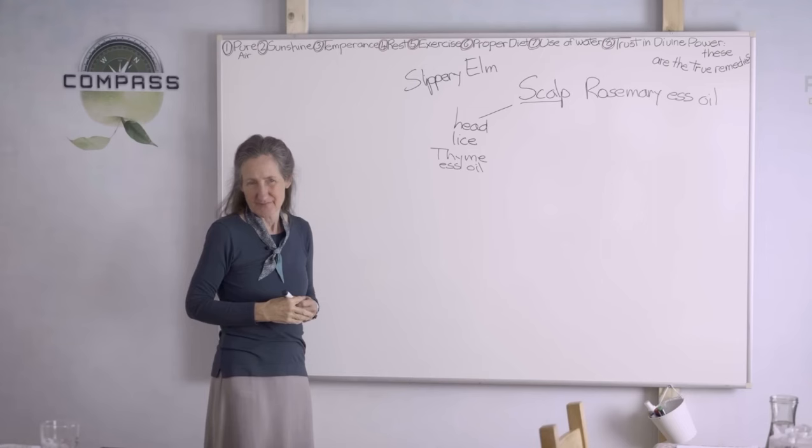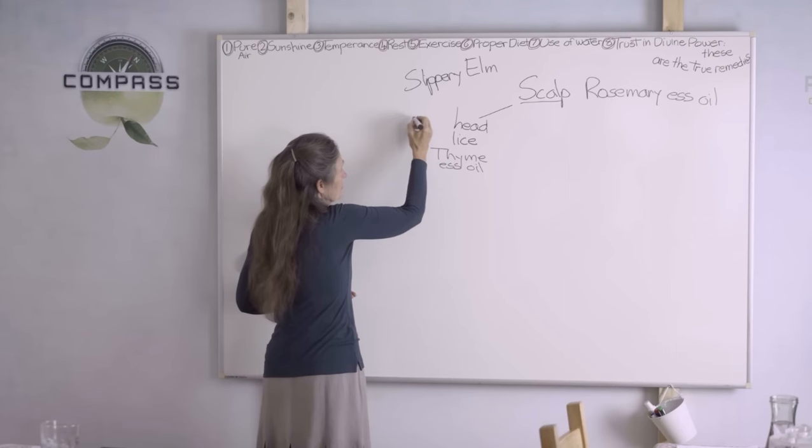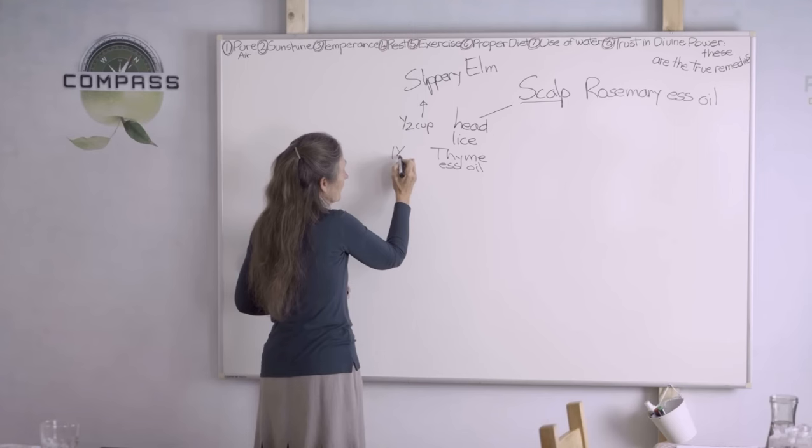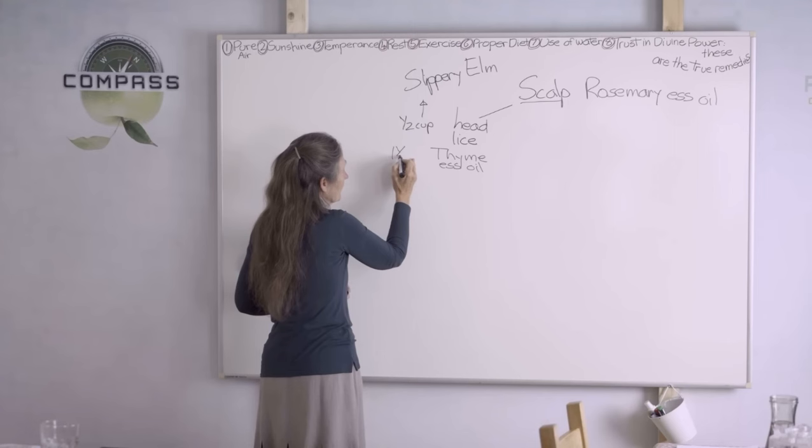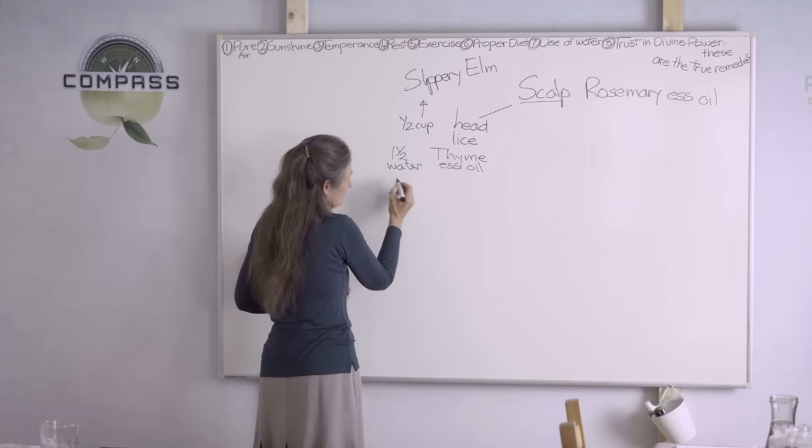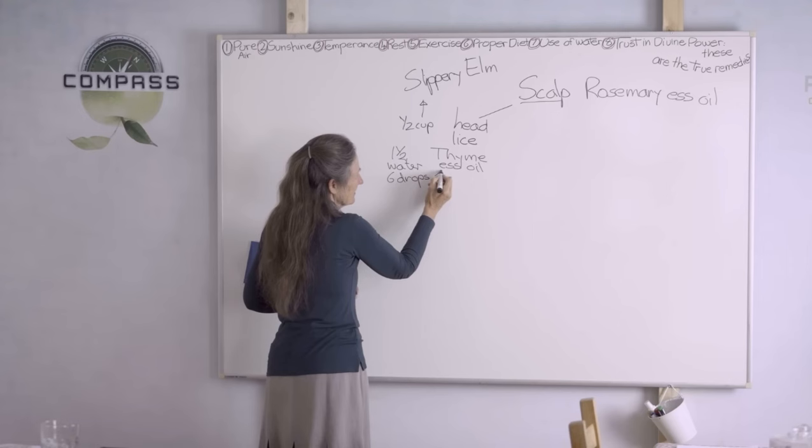What you can do is make, let's say, half a cup of slippery elm. In that half cup, you might put one and a half cups of water. In that mix, you might put probably six drops of thyme essential oil. That's very strong, but you've got about a cup and a half of gel.